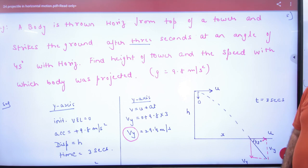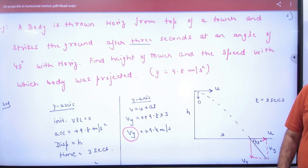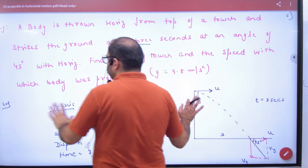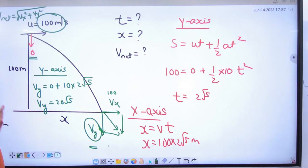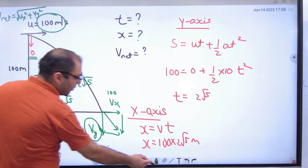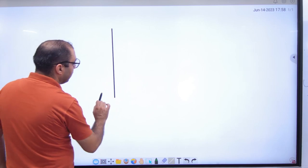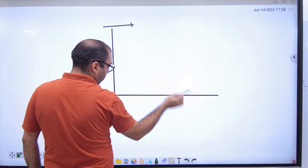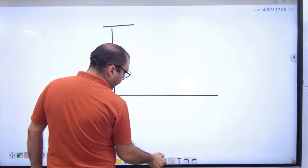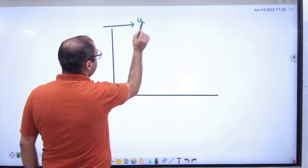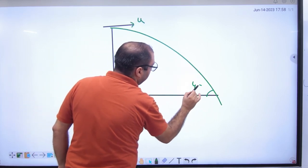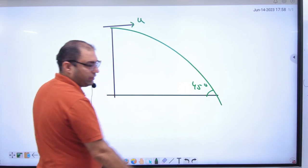The ball strikes at an angle of 45 degrees with the horizontal. Now this is a confusion-creating statement. If I don't show a diagram, many people will probably draw a projectile launched from velocity u and think that the launch angle is 45 degrees.